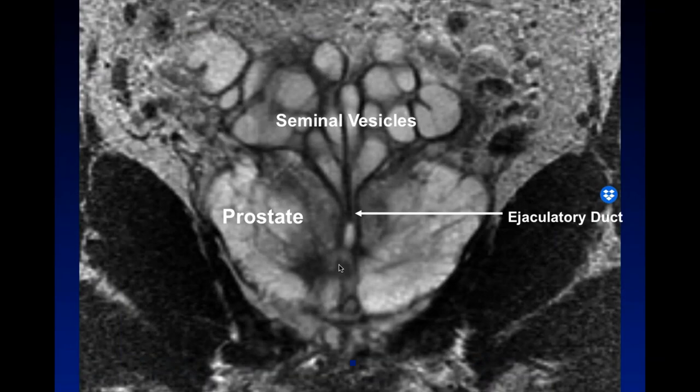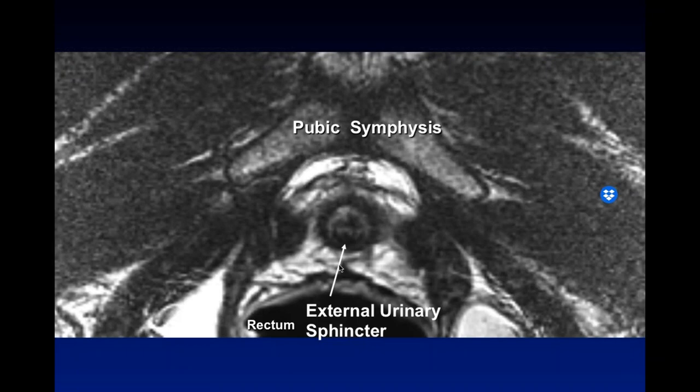MRI also reveals the ejaculatory ducts entering the verumontanum and, critically, the external urinary sphincter — a one-centimeter diameter muscle around the urethra that under ultrasound appears to be prostate. Implanting seeds at full dose into this muscle drives urinary bother symptoms. With MRI, we can identify it, plan around it, and optimize treatment planning to reduce urinary side effects.